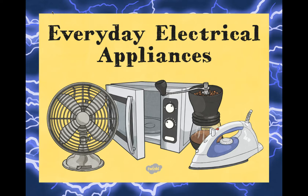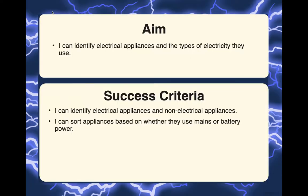So let's get started. Write the objective right underneath the title. The objective is: I can identify electrical appliances and the types of electricity they use. Say it out loud with me: I can identify electrical appliances and the types of electricity they use.